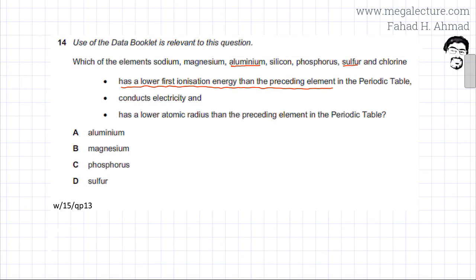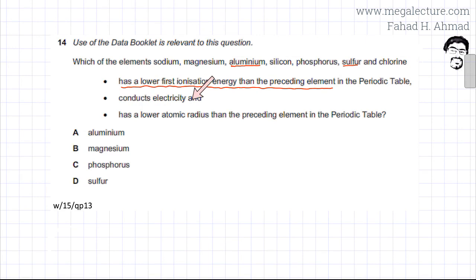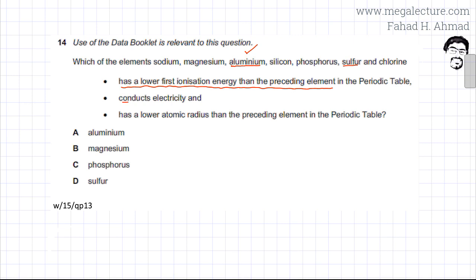The second statement is that the element should be able to conduct electricity. Now we have aluminium and sulfur as options. Aluminium would conduct electricity because aluminium is metallic, so it conducts electricity.